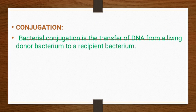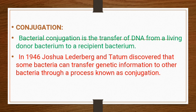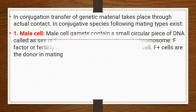In conjugation, bacterial conjugation is the transfer of DNA from a living donor bacterium to a recipient bacterium. In 1946, Joshua Lederberg and Tatum discovered that some bacteria can transfer genetic information to other bacteria through a process known as conjugation.